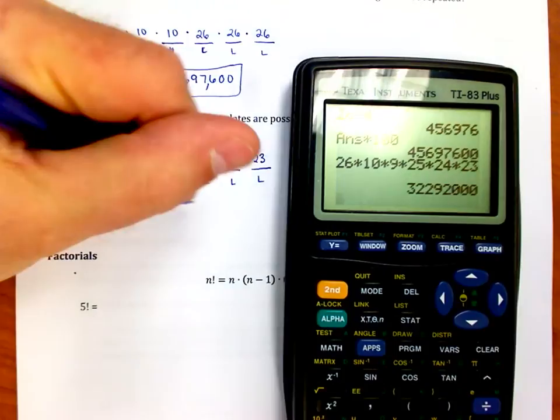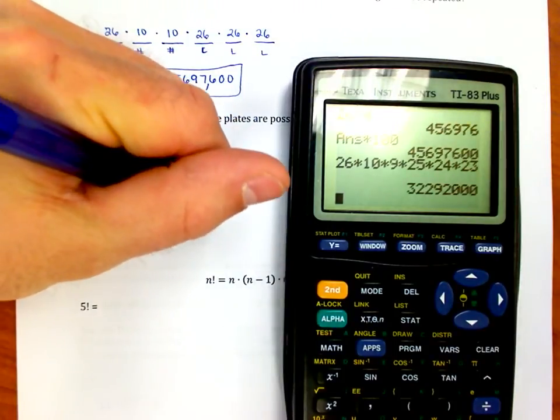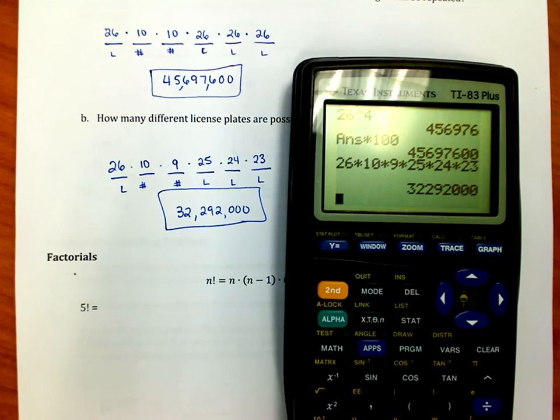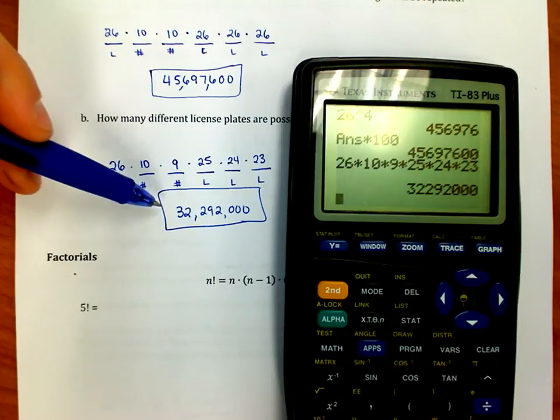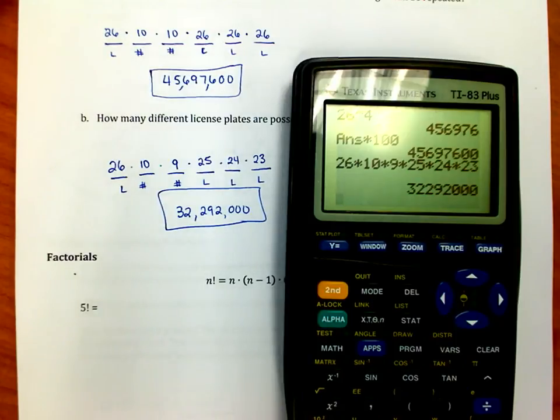And the answer is 32,292,000. So I can only handle 32 million drivers if I don't allow repeating of digits or letters. If I do allow for repeating of digits or letters, now I'm up to 45 million choices. So I got a few more options.